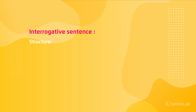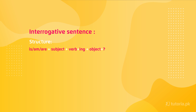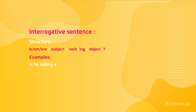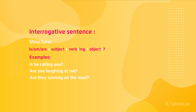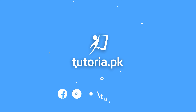Now coming towards the last structure, that is the interrogative or question sentences. In question sentences, the auxiliary verb comes at the start of the sentence. So the structure is: is/am/are + Subject + present participle + object. For example: 'Is he calling you?' 'Are you laughing at me?' 'Are they running on the road?' 'Is she planning about her studies?' All of these sentences follow the structure where the auxiliary verb comes first, then subject, then present participle, then object.